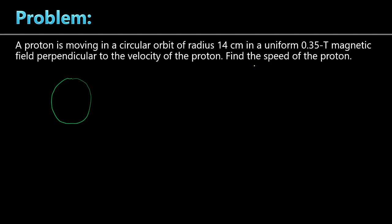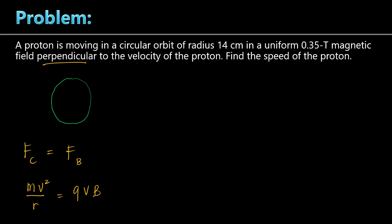There is a formula for the speed, and if you forgot it, it is easy to derive. Since the path is circular, the charged particle experiences a centripetal force. We equate the centripetal force to the magnetic force: mv squared over r equals qvb — because the velocity and magnetic field are perpendicular, sine of 90 is 1, so sin theta disappears. Cancelling one v from both sides, the velocity equals BqR over m.